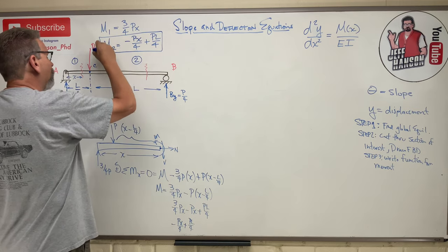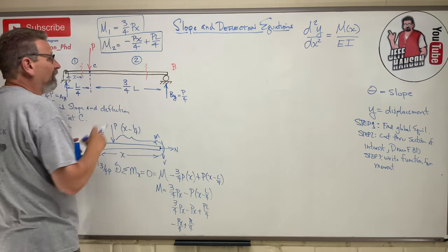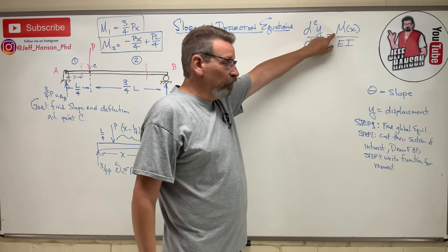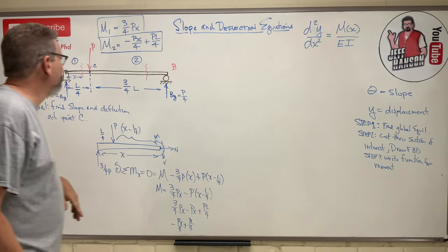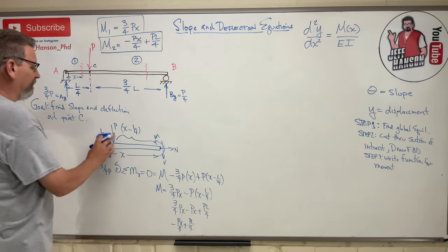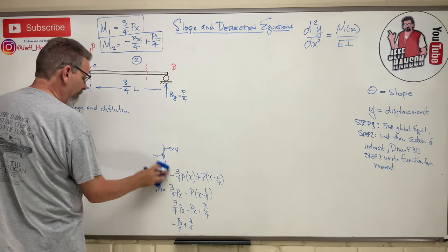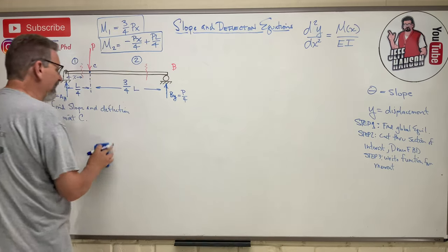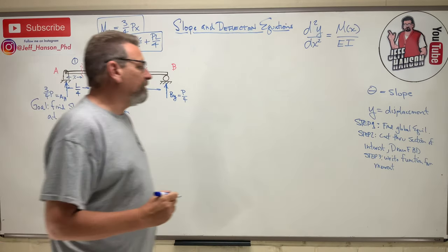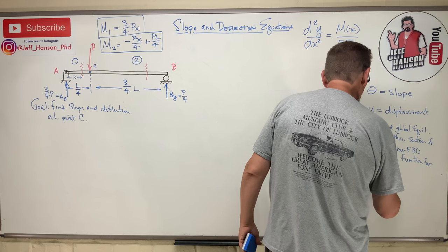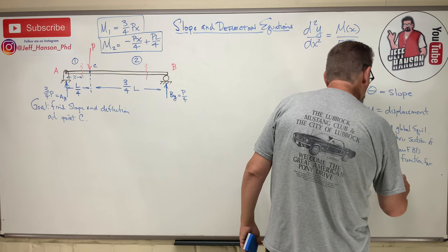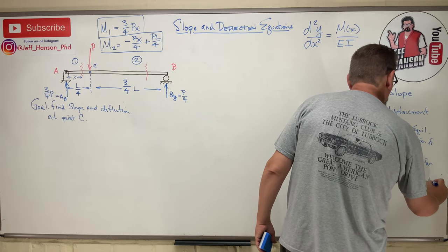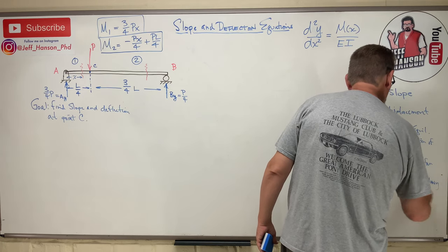We now have both moment functions. M₁ = (3/4)Px valid from A to C, and M₂ = -Px/4 + PL/4 valid from C to B. These are what we plug into our EI y'' = M equation. Next, step four: determine boundary conditions.